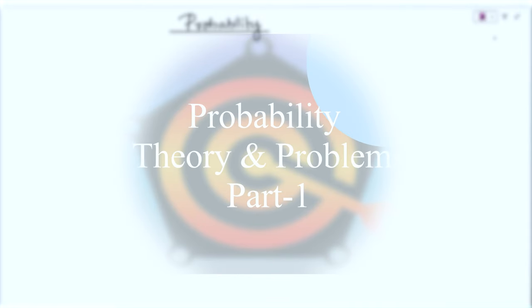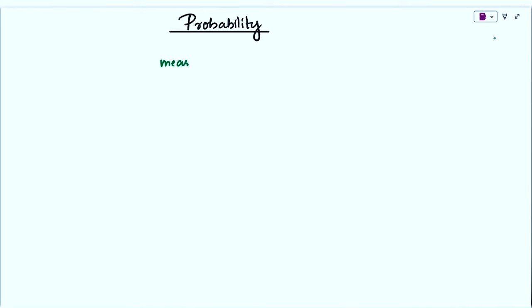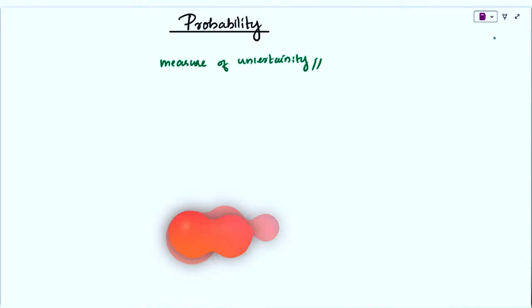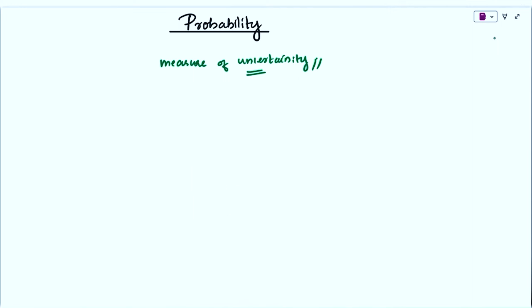Today, we are going to discuss a new chapter in mathematics which is probability. In lower classes, we studied about the concept of probability as a measure of uncertainty. Uncertainty means it has some errors — measure of uncertainty means we have no accurate value over that measurement. So we use probability for measuring that quantity.